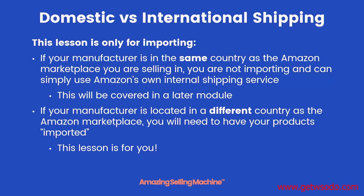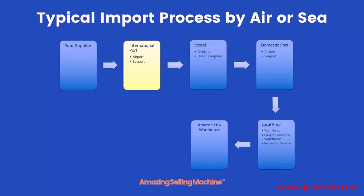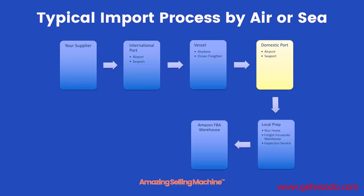I've put together a graphical representation to give you a high-level overview of how the entire importation process works, and it's pretty much the same whether it goes by air or by sea. First, your supplier manufactures the products and delivers them to the international port — either an airport or seaport — in their country. Those products are then loaded onto a vessel, either an airplane or ocean freighter, and eventually arrive at the domestic port in the country where your Amazon marketplace is located.